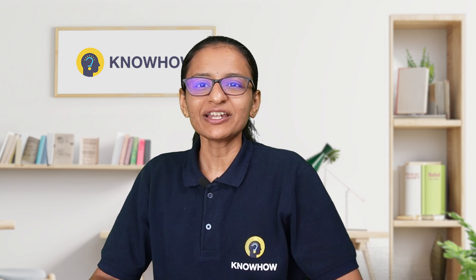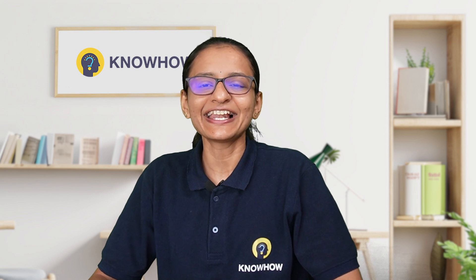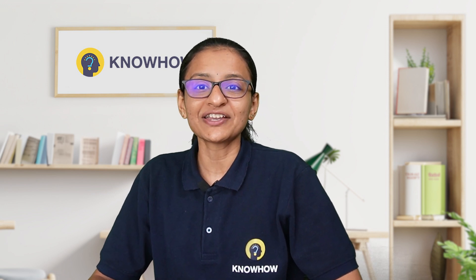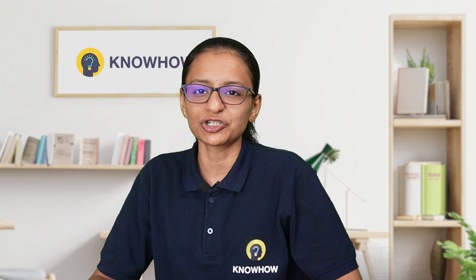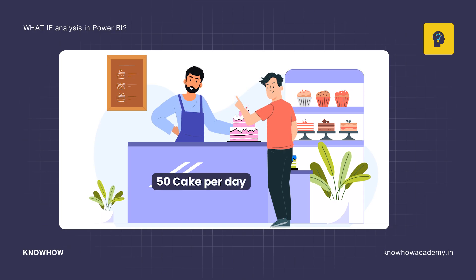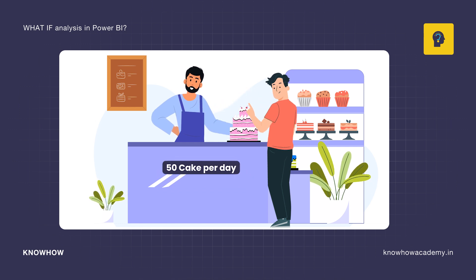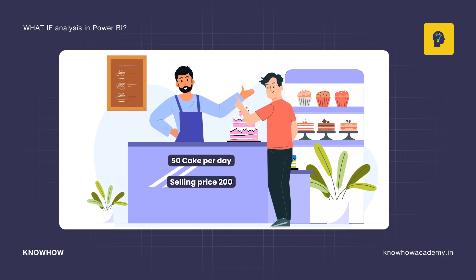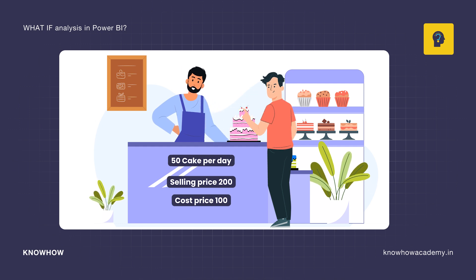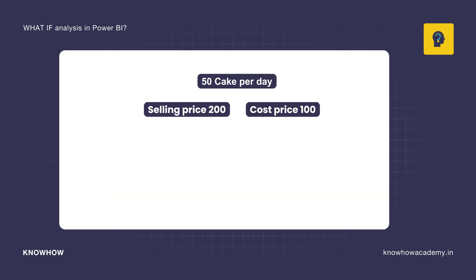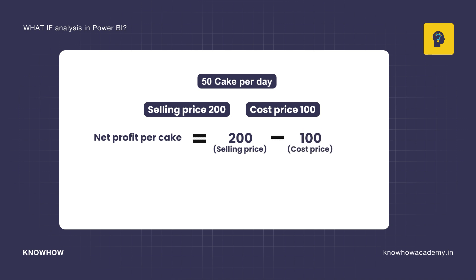Let me explain what-if analysis using a real-life scenario. Imagine you are selling cakes in your shop. You are selling 50 cakes per day, and the selling price of each cake is Rs. 200. The cost price of each cake is Rs. 100, so your net profit per cake is Rs. 200 minus Rs. 100, which equals Rs. 100 per cake.